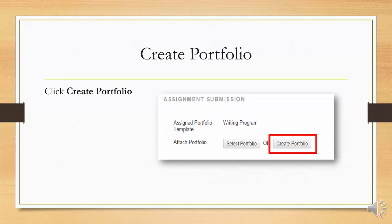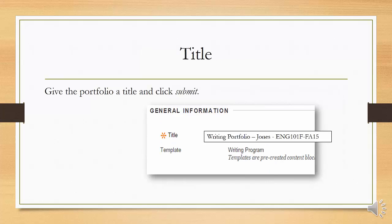You will be visiting this screen twice. The first time will be to create your empty portfolio by clicking Create Portfolio. In the steps that follow, you will add papers to the portfolio and share it. When your portfolio is complete, you will return to this assignment and choose Select Portfolio to complete the assignment. Give the portfolio a title and click Submit — use "Writing Portfolio," your last name, and your course number, or a title suggested by your instructor.